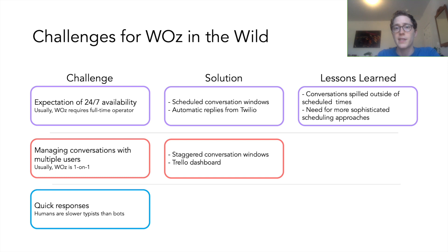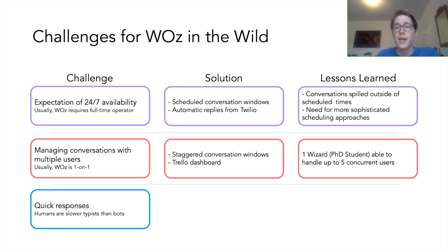For the second challenge, we staggered the scheduled windows with each user, and also integrated with a Trello dashboard to track multiple conversations. In practice, we found that one wizard — a PhD student — was able to handle up to five participants at a time while completing other work, which suggests feasibility for small-to-medium-scale studies, but not larger ones.